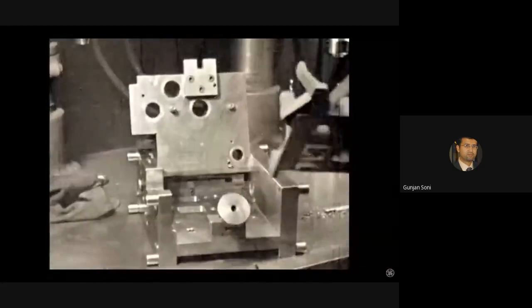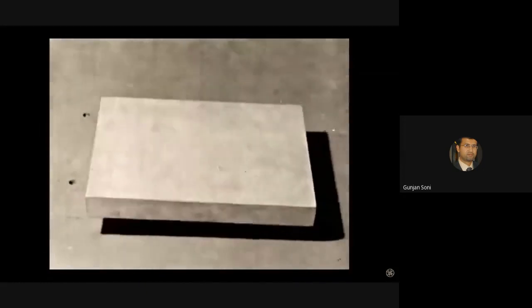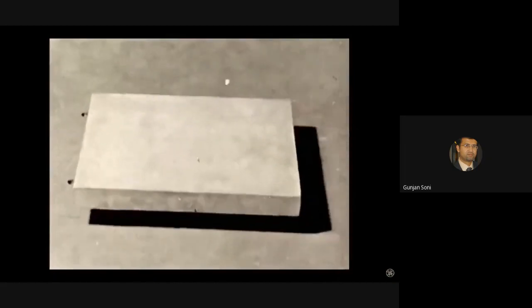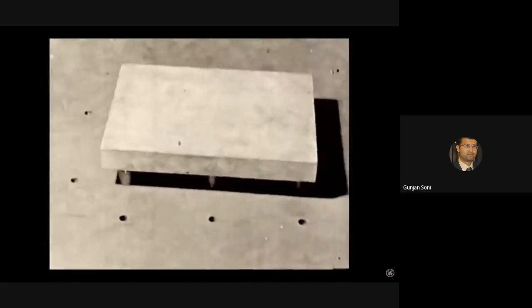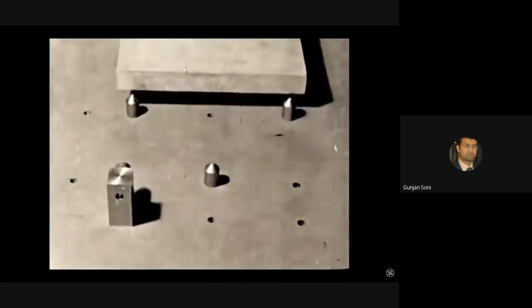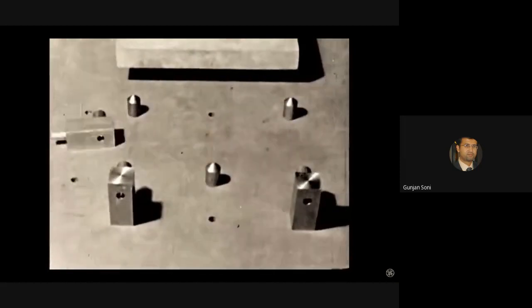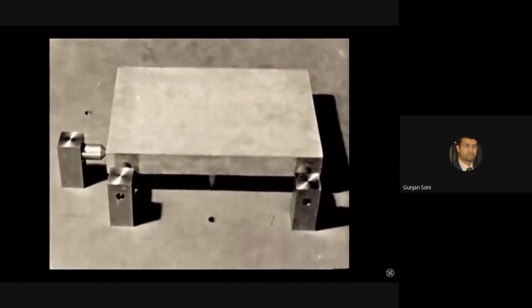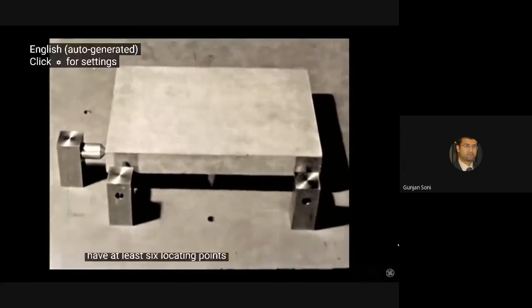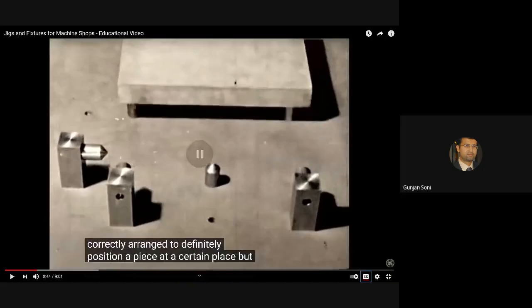Their general purpose is to locate and hold the work securely. If we rest it on a single point, it can still move in a number of ways. It can rock up on two points. One of these tilting movements is accomplished. A fifth point restricts the freedom of movement still further. Finally, the addition of a sixth point establishes the definite location we are seeking.